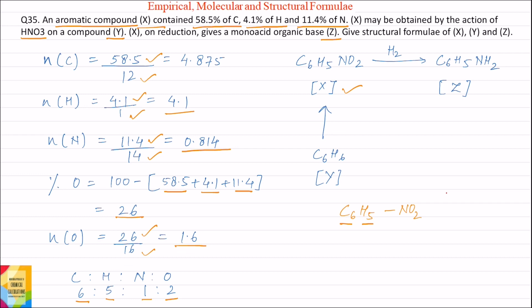Now we'll verify from the reactions given in the question. X may be obtained by the action of HNO3 on compound Y. So compound Y could be benzene because benzene when acted upon by HNO3 gives C6H5NO2.